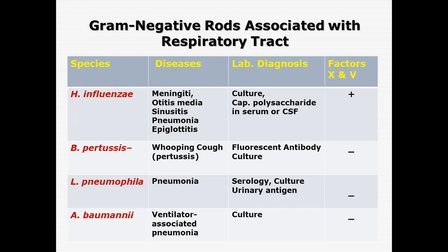Bordetella pertussis, which causes whooping cough, can be identified by culture or by fluorescent antibody techniques, and does not require addition of X and V factors. Legionella pneumophila, which causes pneumonia, can be diagnosed by serology, culture, or antigen identification, and also does not require addition of extra factors. Acinetobacter baumannii causes ventilator-associated pneumonia, a major cause in hospitalized individuals, and can be grown on routine media.